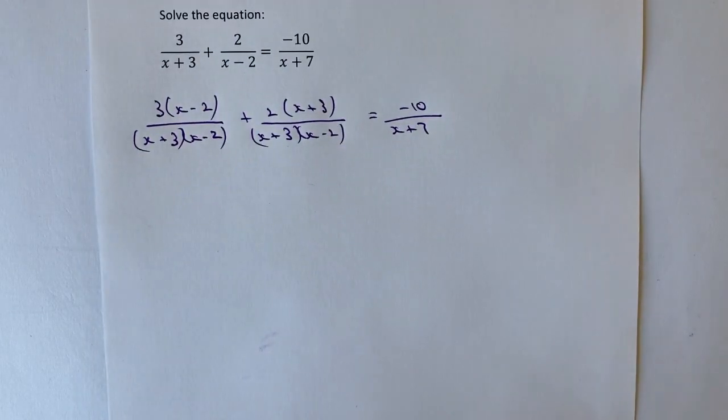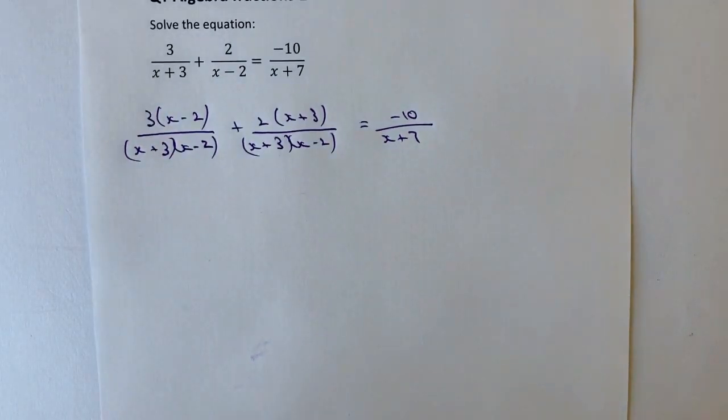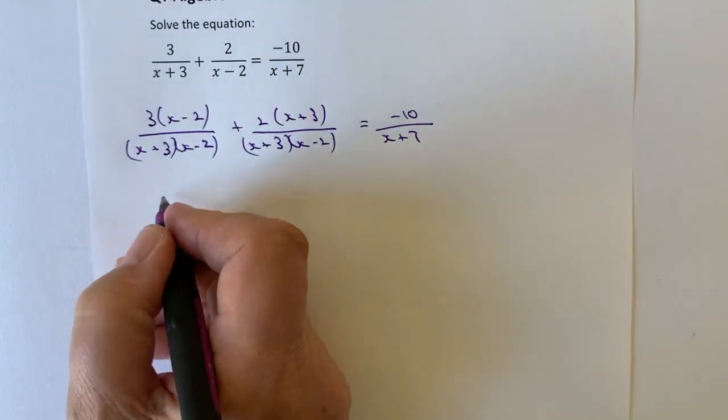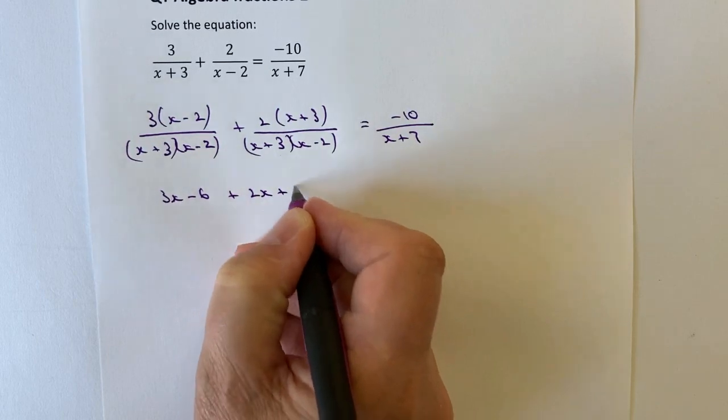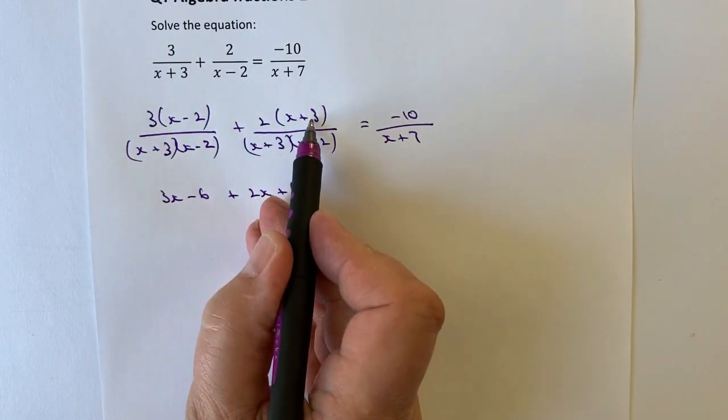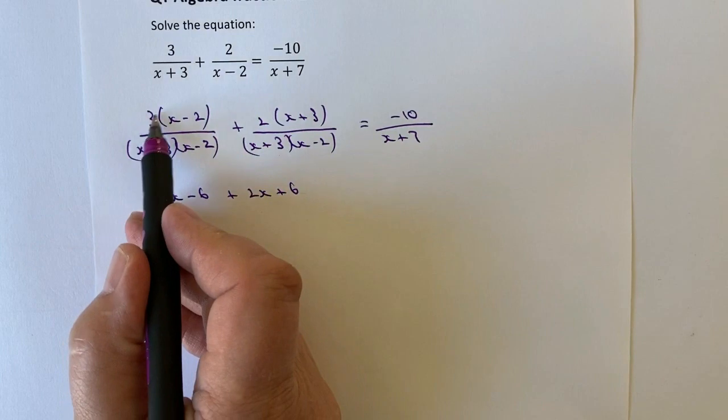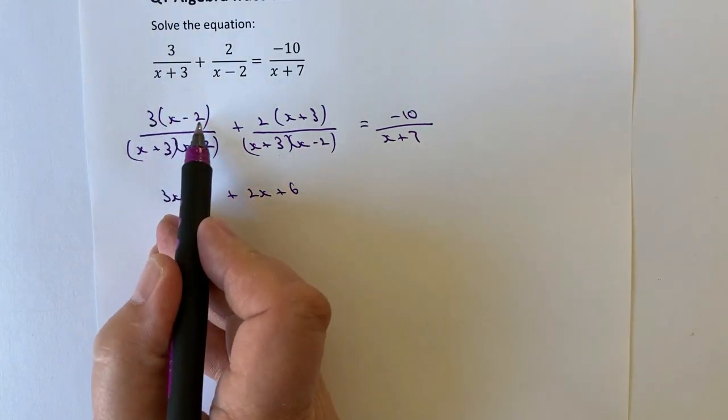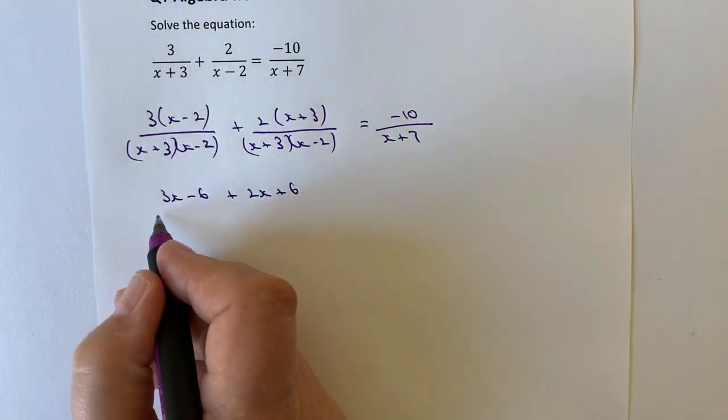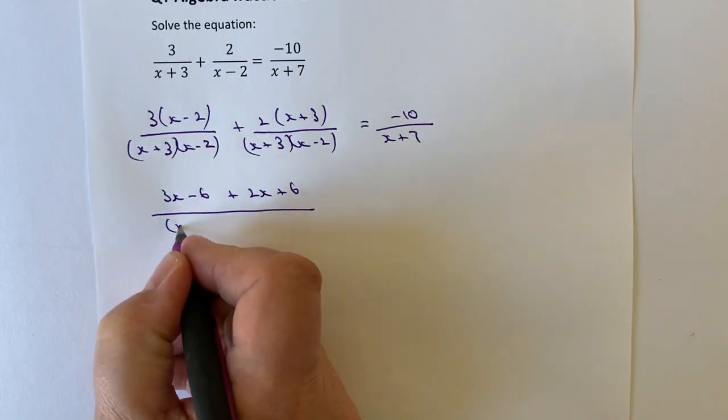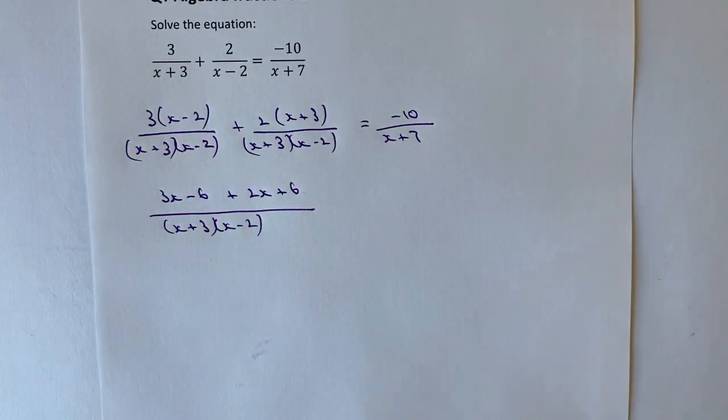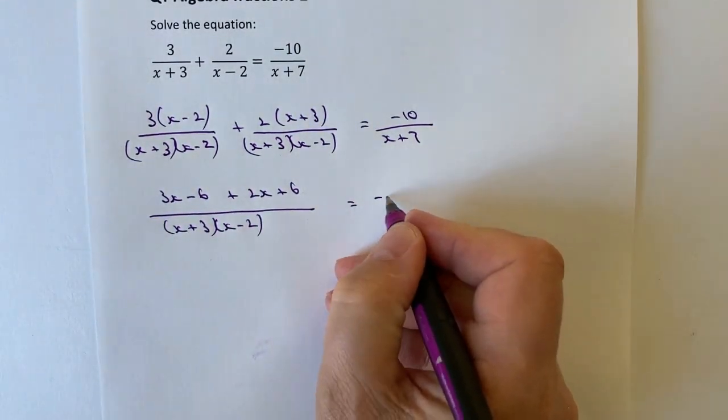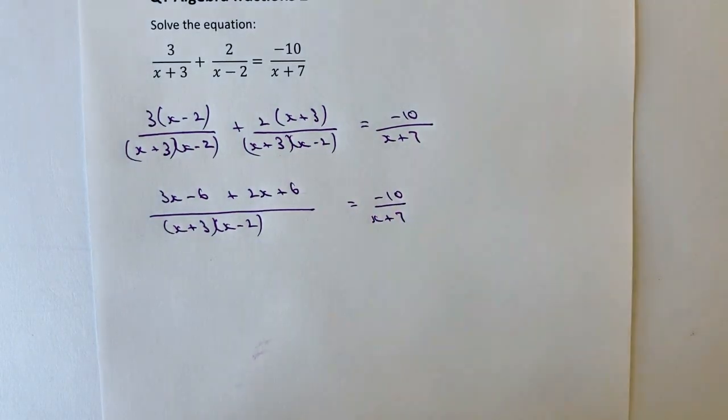The first thing I'm going to do is get rid of these brackets at the top and add those terms together. If I multiply this out, I'm going to get 3x minus 6 plus 2x plus 6. That's going to be divided by (x+3) multiplied by (x-2), and that equals minus 10 over x plus 7.